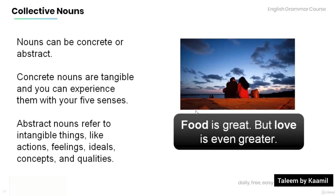Have a look at the example over here. 'Food is great, but love is even greater.' Note that the noun 'food' in this sentence is a concrete noun because food is tangible and you can experience it with your five senses. 'Love,' on the other hand, is an abstract noun because it refers to something that is intangible — a feeling.